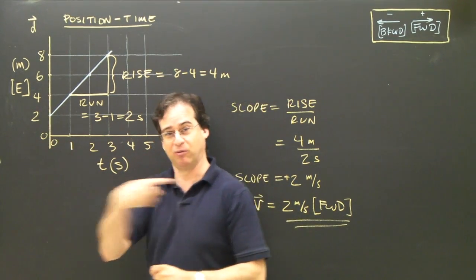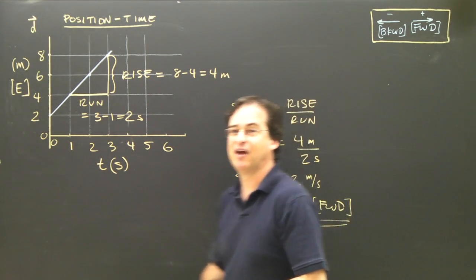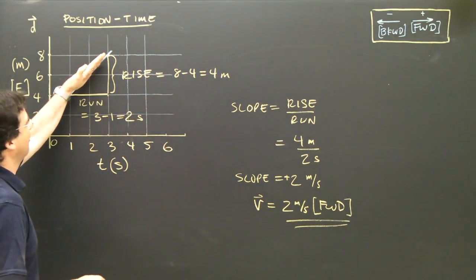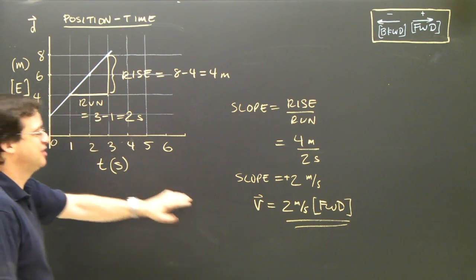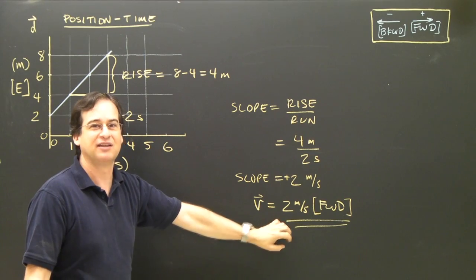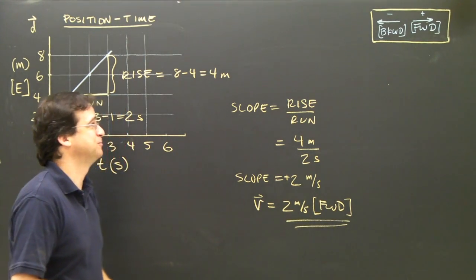The numbers told us we were moving that way. And the slope tells us we're moving that way at 2 meters per second. And since the slope here is the same as the slope here because it isn't changing, then we're continually moving at 2 meters per second. That's called uniform motion.